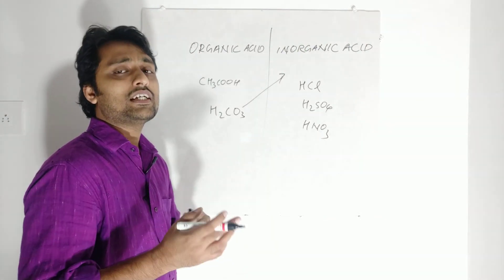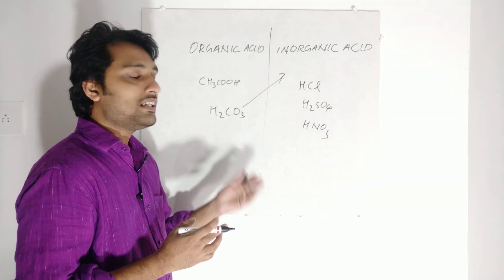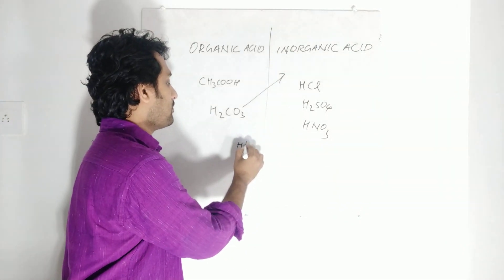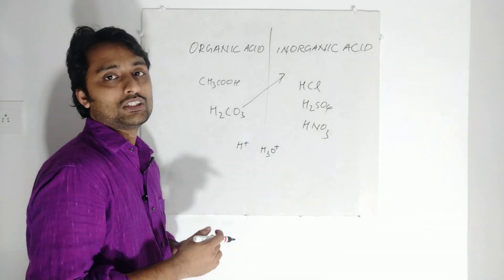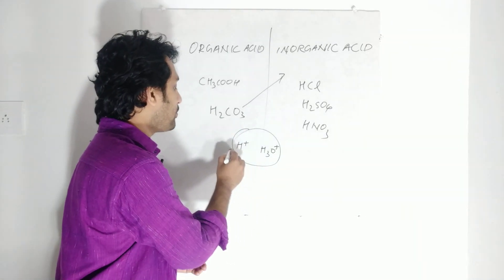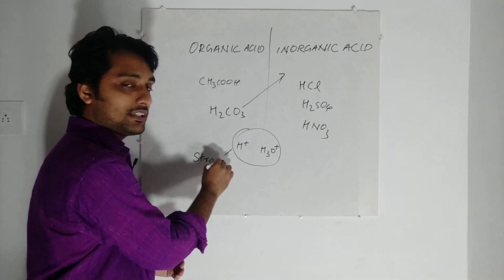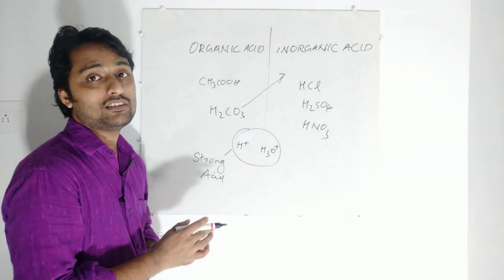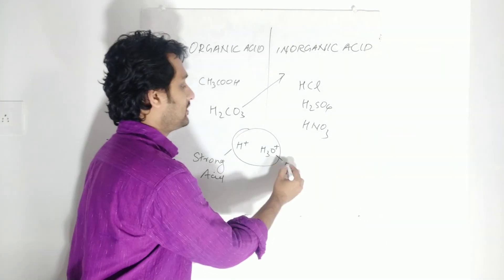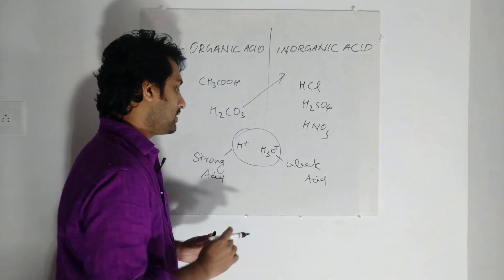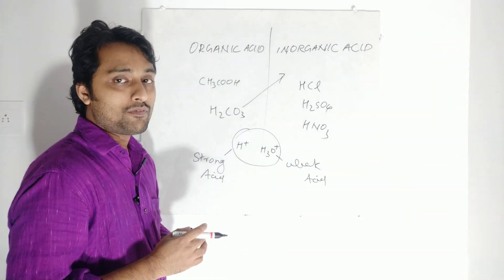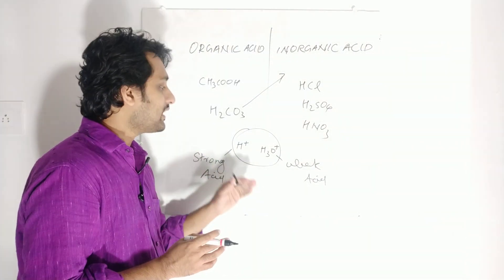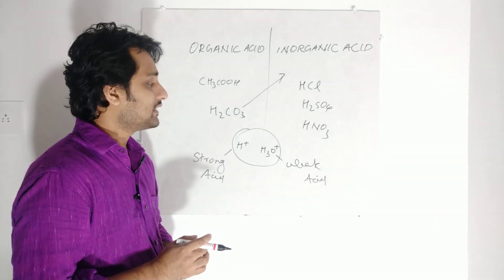So what is a strong acid and a weak acid? While dissolving in water, the acid which gives more H⁺ ions — or H₃O⁺ ions — in solution is known as a strong acid. The acid which dissociates less, giving very few ions in solution, is known as a weak acid. So when an acid is dissolved in water: more H⁺ or H₃O⁺ ions means strong acid; fewer ions means weak acid.